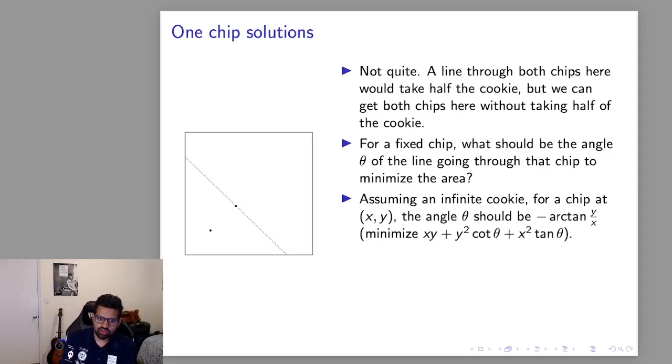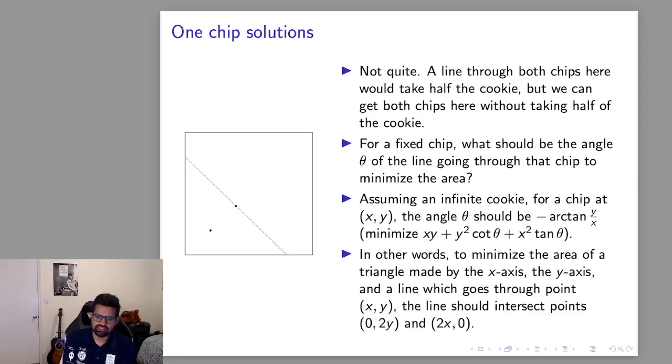This is pretty cool. Another way of phrasing this is if you consider the line going through (x,y) it's the negative angle of the point itself. So the line going through (x,y) also needs to go through (0,2y) and (2x,0) so you can still represent all of the lines that you need to consider with two integer points.